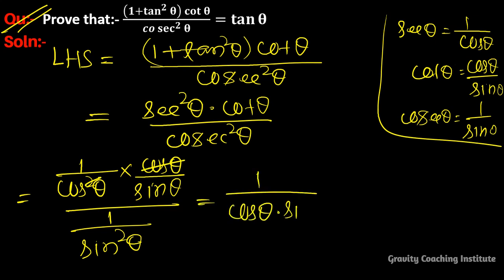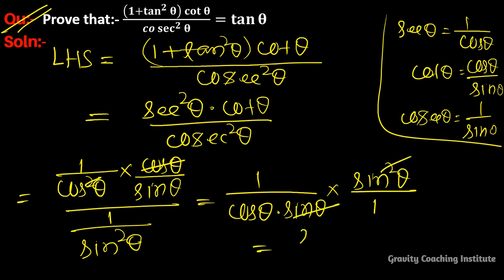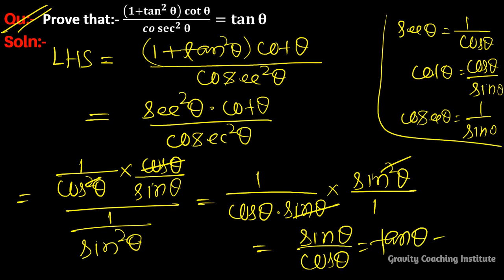Multiplying by sinθ, and the reciprocal of 1/sin²θ gives sin²θ. The sin² and sinθ cancel, so we get sinθ/cosθ, which equals tanθ = RHS. Hence proved.